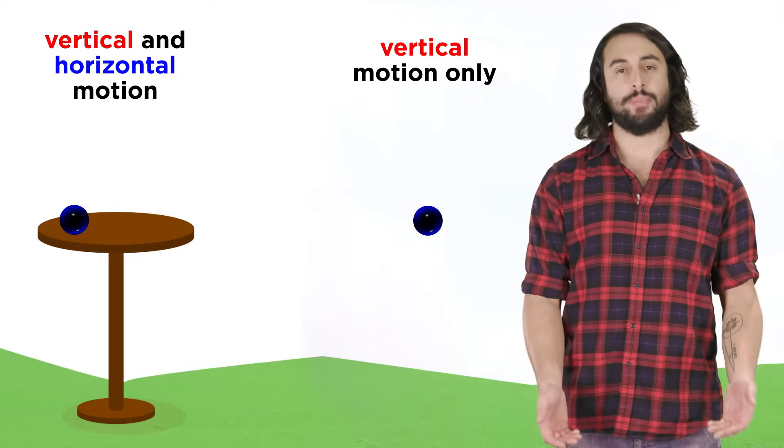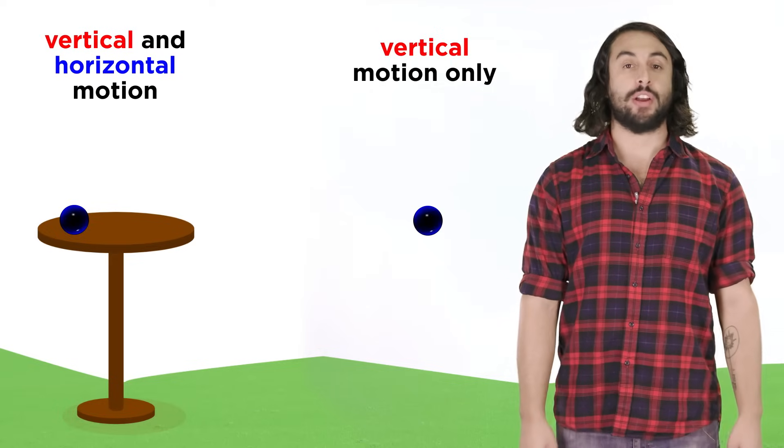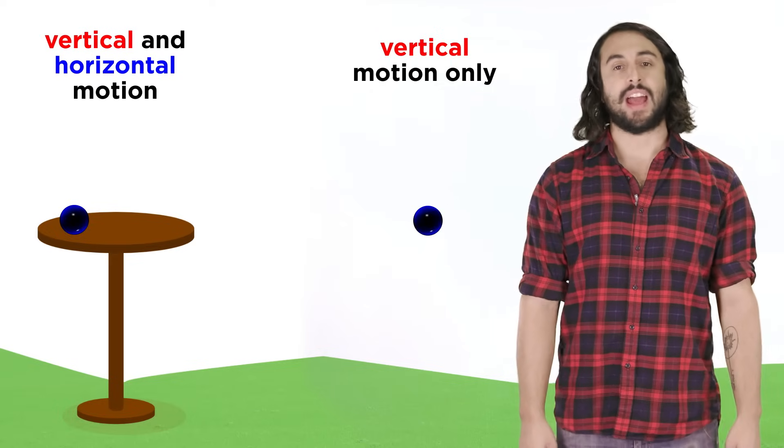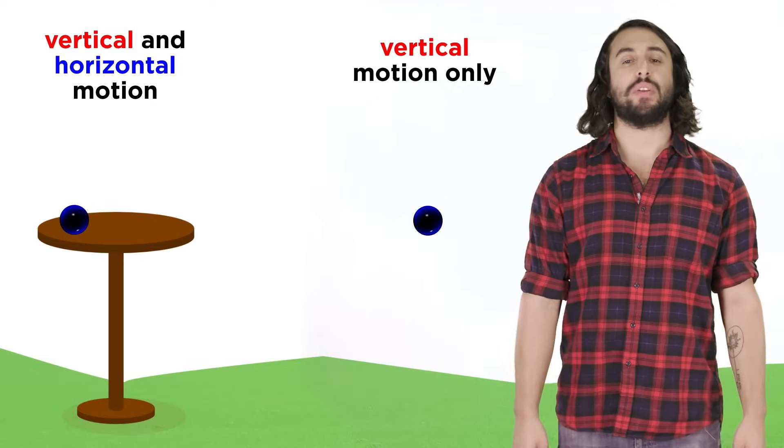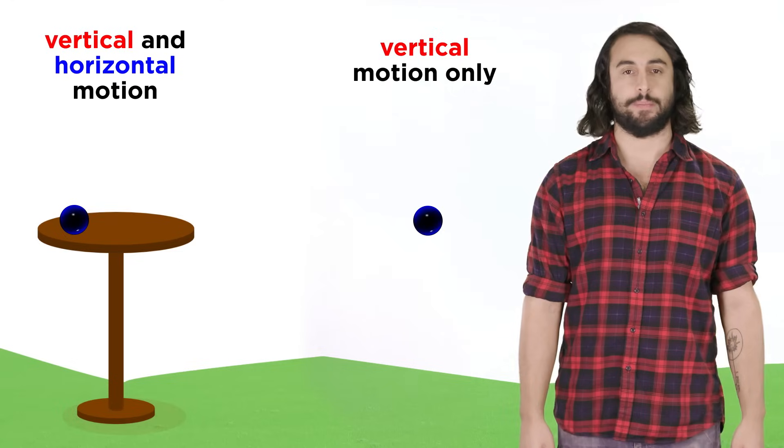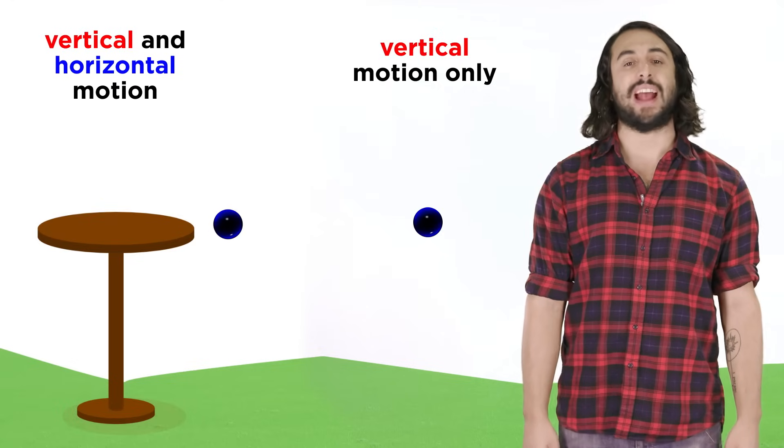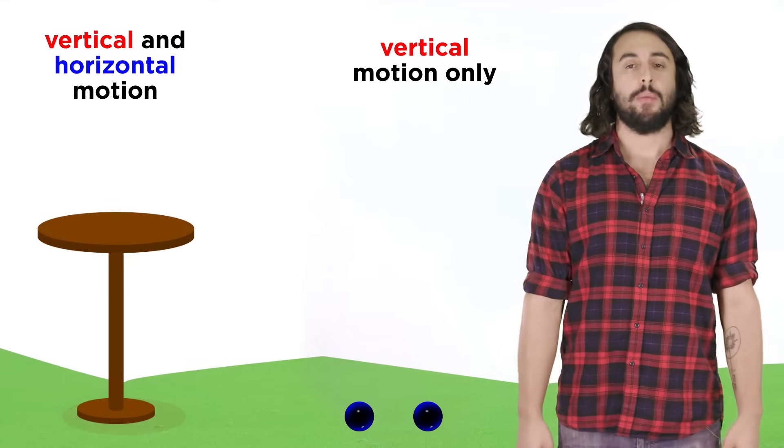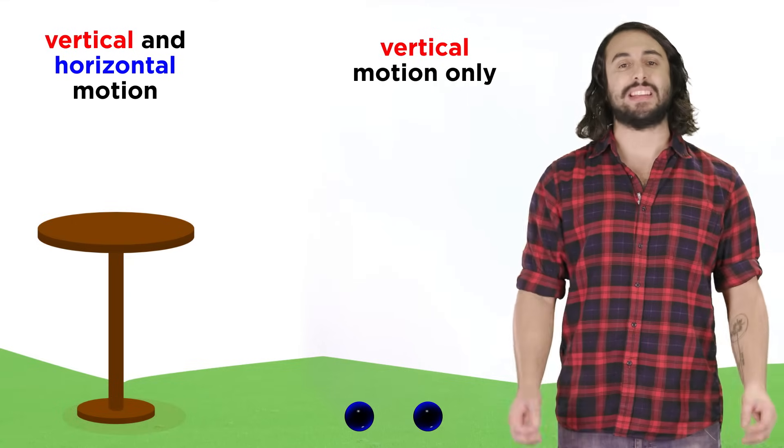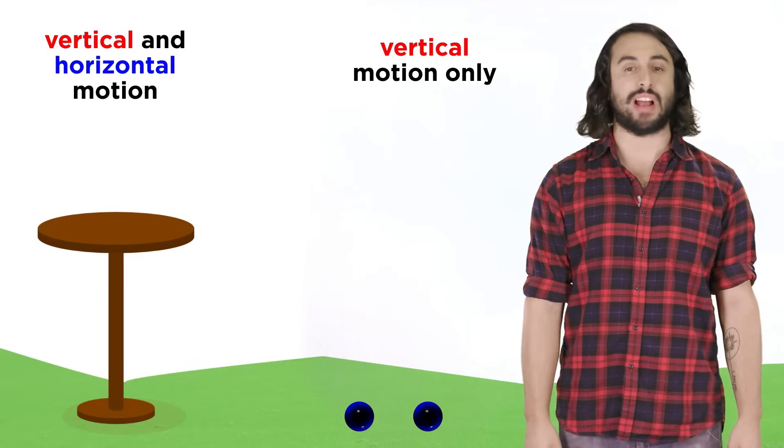To drive this idea home, consider two marbles, one dropped from a particular height and another that rolls off of a surface at that same height with some horizontal velocity. If these begin falling at the same time, they will strike the ground at the same instant because their vertical motion is independent of any horizontal motion.